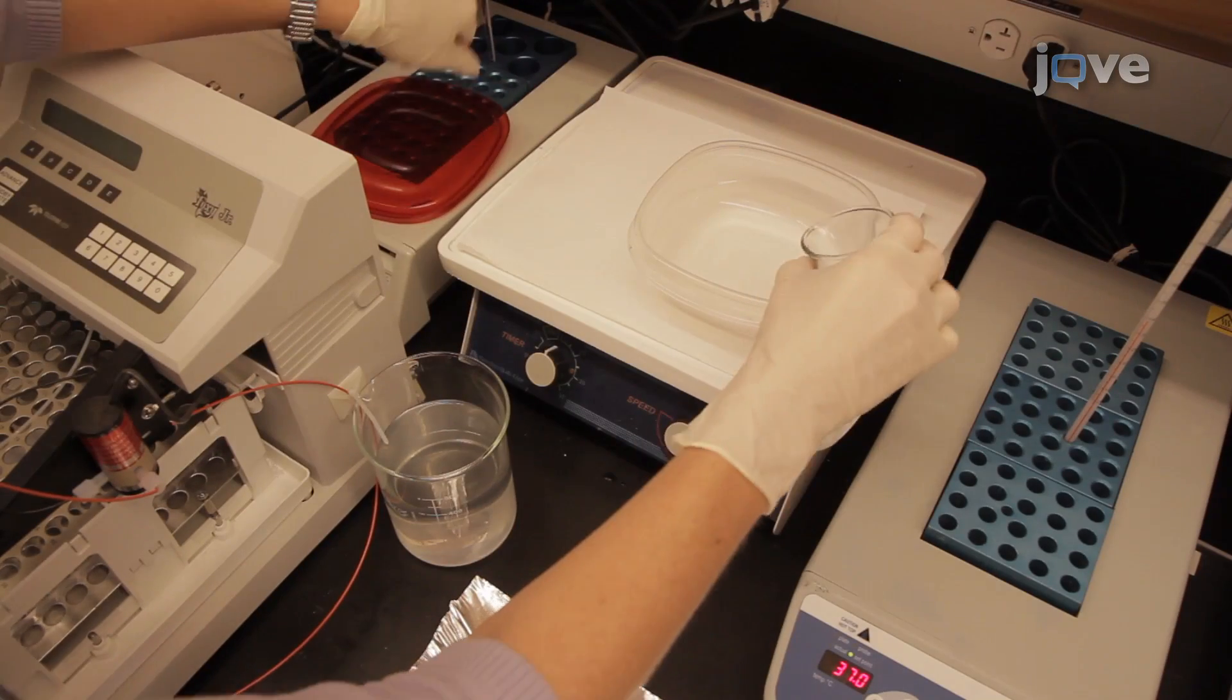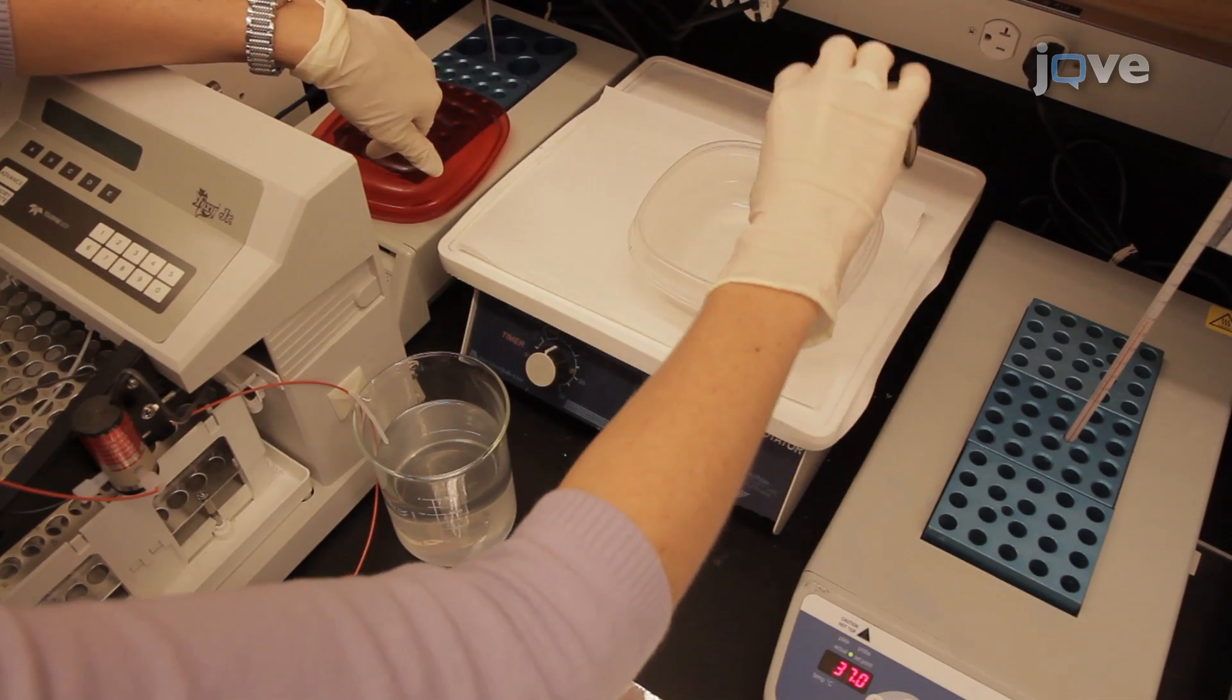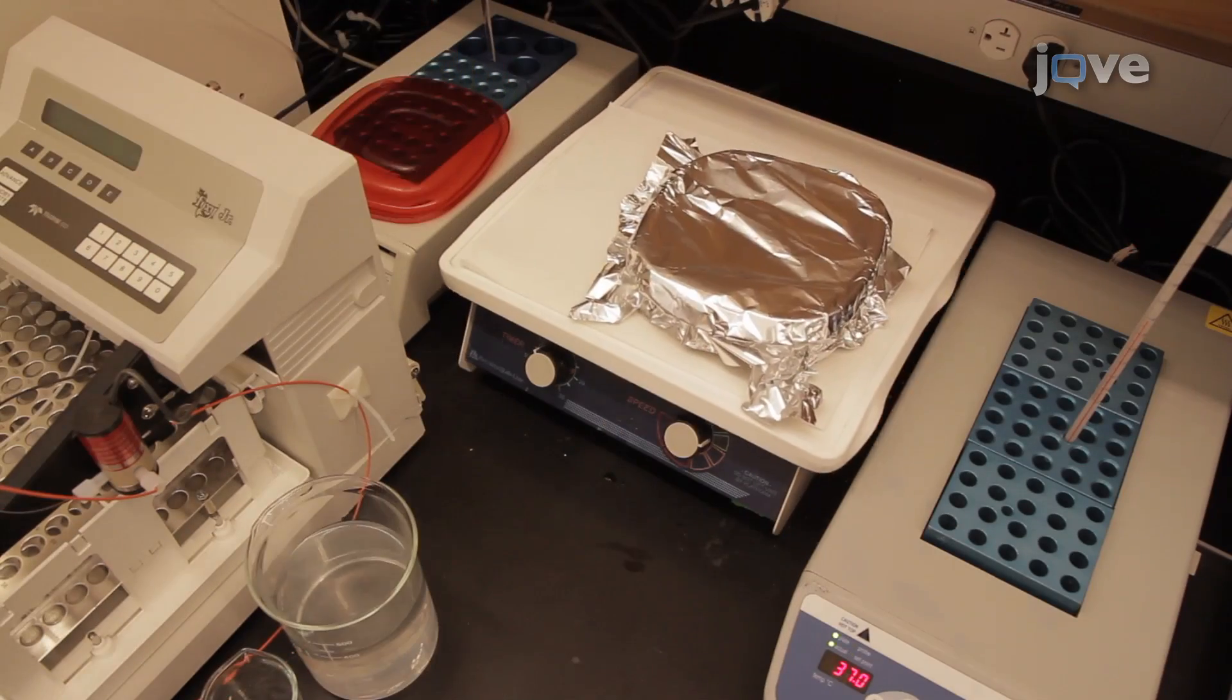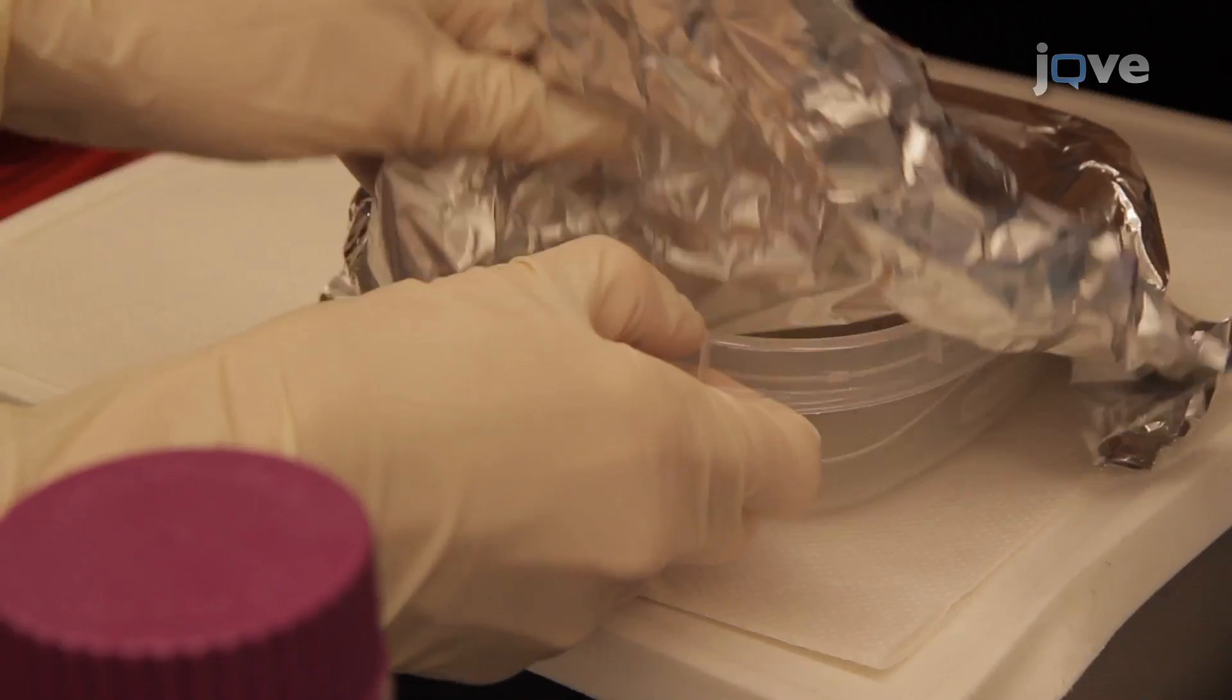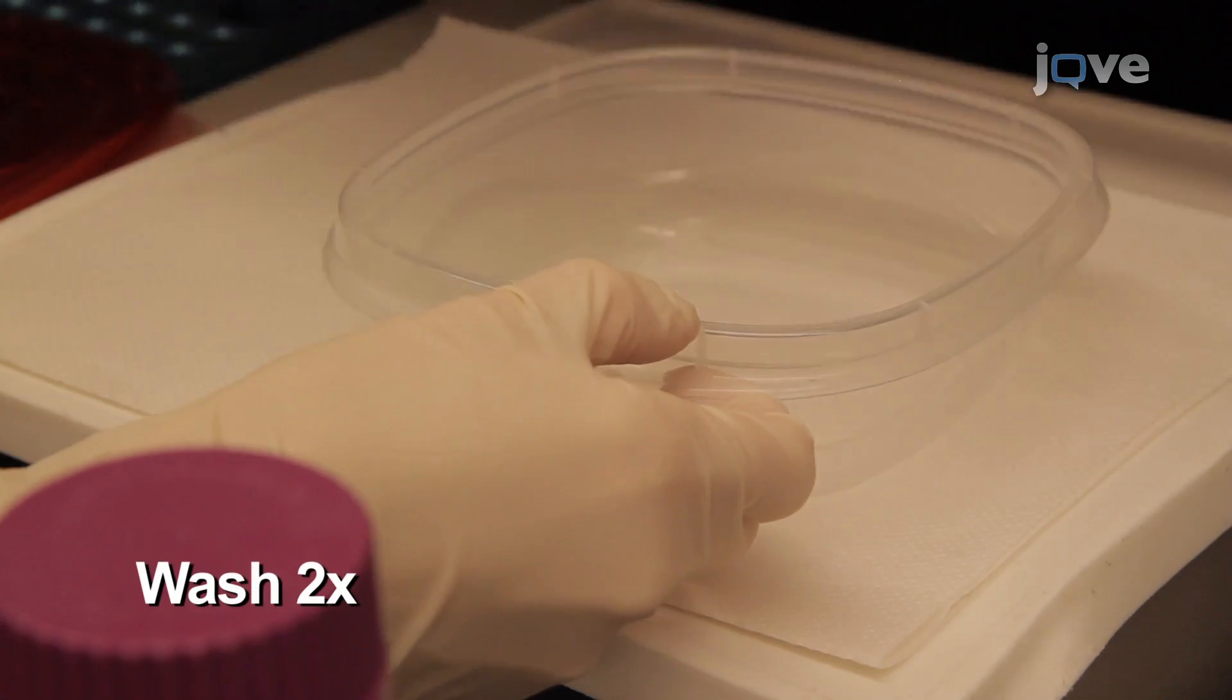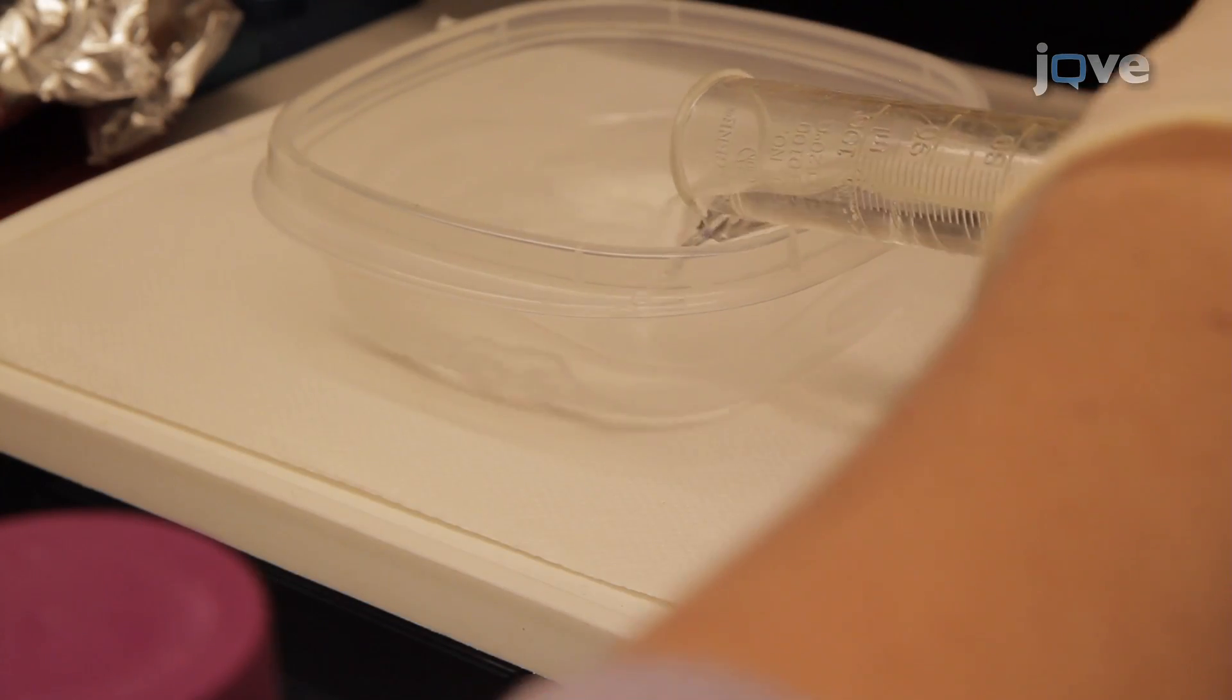Stain the gel by incubating in the prepared stain under dark conditions with gentle agitation for 90 to 120 minutes. Subsequent to gel staining, repeat the two wash steps as described earlier.